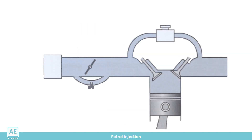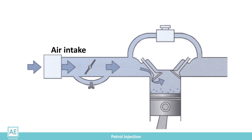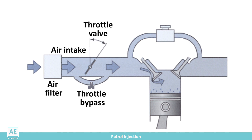The air intake has the task of drawing air from the environment to the engine through the intake line to form the mixture and burn the fuel. The elements of the engine air intake are the air filter, the throttle valve, the throttle bypass, and the EGR valve for returning part of the exhaust gas to the intake manifold.